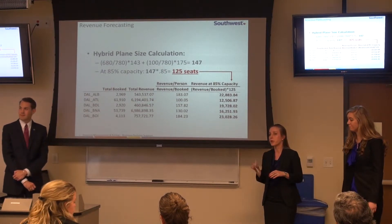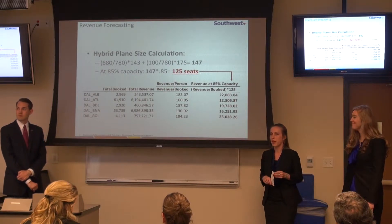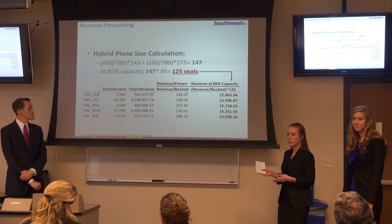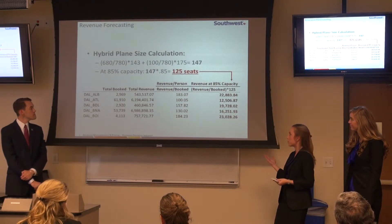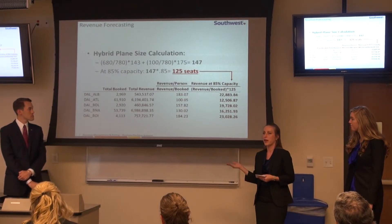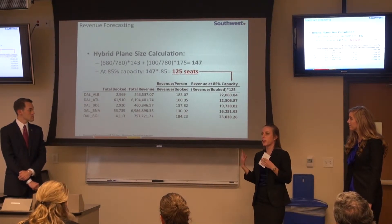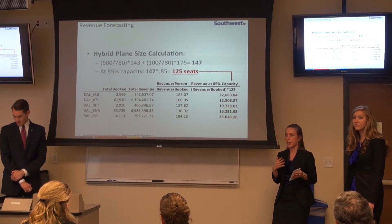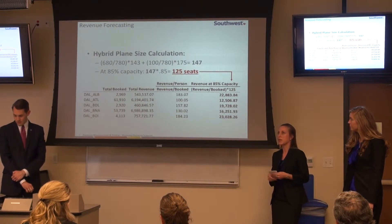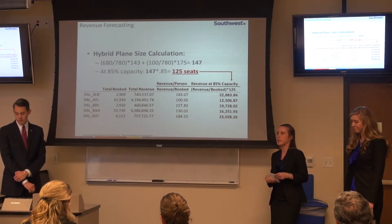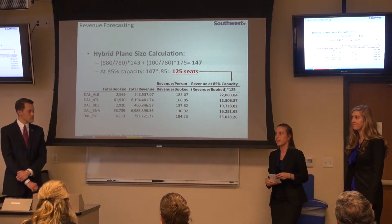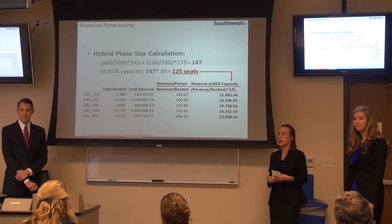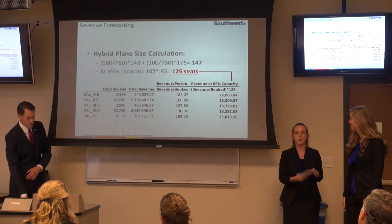To get revenue per flight, we multiplied revenue per seat by 125 — representing an 85% capacity load. We used 125 because there are different seat capacities across the Southwest fleet: 680 planes with 143 seats and 100 737s with 175 seats. We used a weighted average of a hybrid plane of 147 seats, and at 85% capacity that gives us 125.